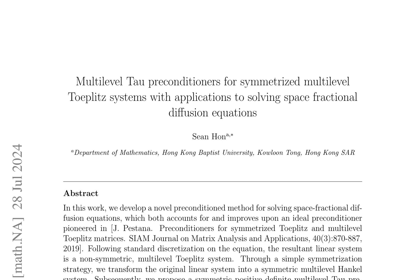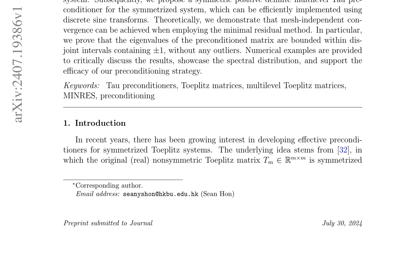Theoretical analysis demonstrates that mesh-independent convergence can be achieved when employing the minimal residual method. Specifically, the eigenvalues of the preconditioned matrix are proven to be bounded within disjoint intervals containing plus or minus one, without any outliers. The proposed preconditioning strategy is motivated by the growing interest in developing effective preconditioners for symmetrized Toeplitz systems. Theoretical results show that the preconditioned matrix's eigenvalues are clustered around plus or minus one, indicating a well-conditioned system. Numerical examples are presented to critically discuss the results and showcase the spectral distribution.